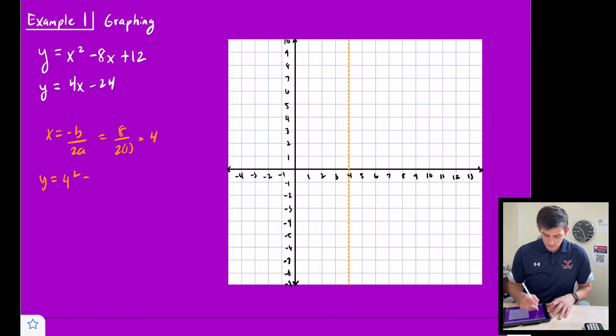So 4² - 8(4) + 12. So we get 16 - 32 + 12. So we get -16 + 12, and we get -4. So our vertex would be at (4, -4).